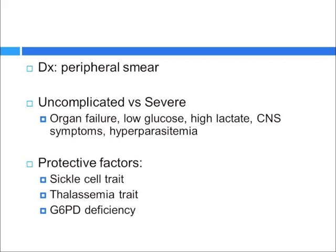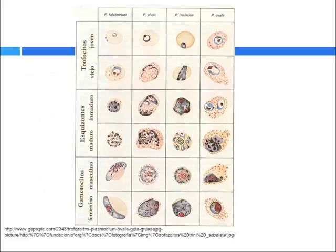Diagnosis is mainly by peripheral smear. There can be uncomplicated and severe forms of malaria. The severe forms involve multi-organ failure, low glucose, high lactate, neurologic symptoms, and hyperparasitemia. Some protective factors in these endemic regions include sickle cell trait, thalassemia trait, or G6PD deficiency — the RBCs linger for less time in the bloodstream, so the plasmodium doesn't have a chance to replicate as effectively.